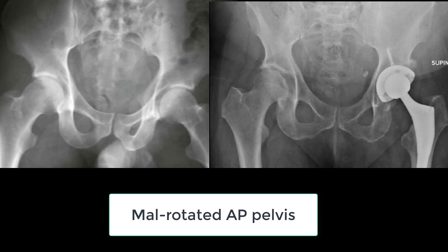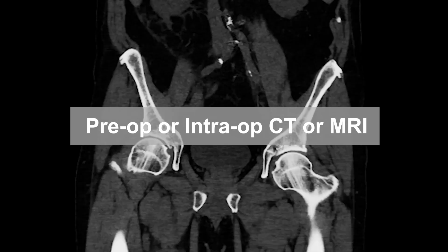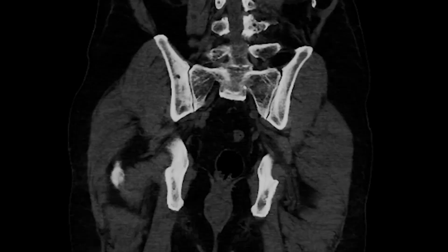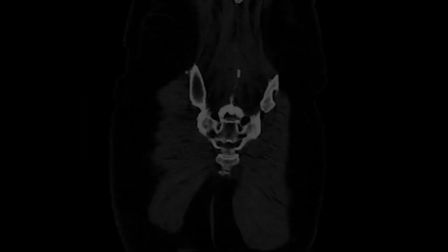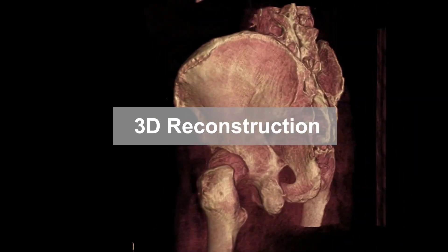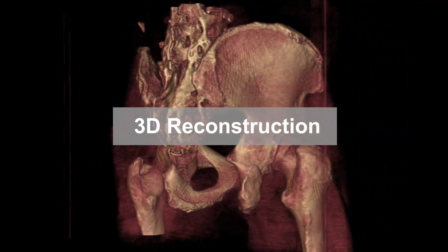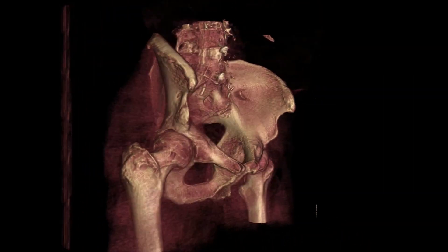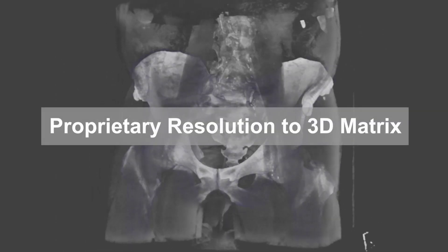The new RadLINK-323 solution allows surgeons to make accurate measurements, utilizing a preoperative CT or 3D c-arm intraoperative CT. RadLINK-323 software creates a 3D model of the pelvis or operative hip.